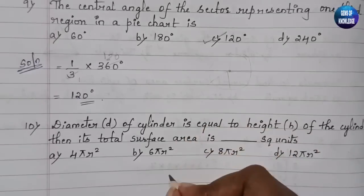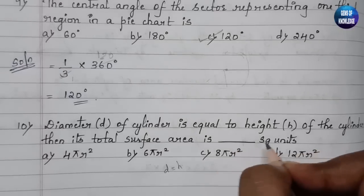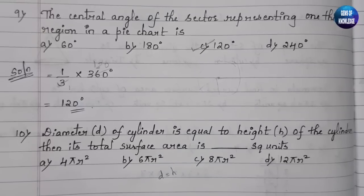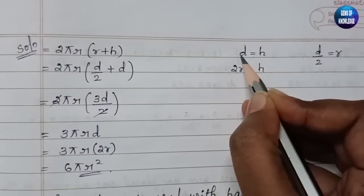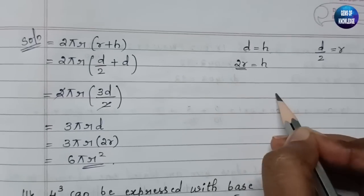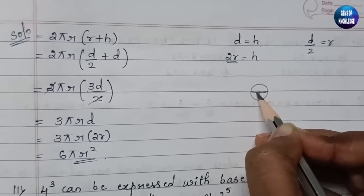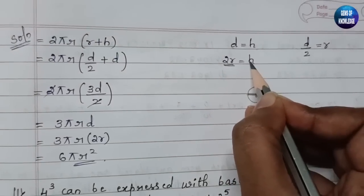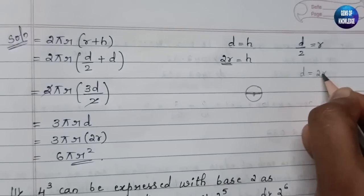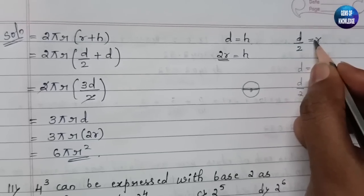The tenth question: the diameter d of a cylinder equals its height h. We need to find the total surface area (TSA). Given d = h, and since d = 2r, we can write 2r = h, and therefore r = d/2.